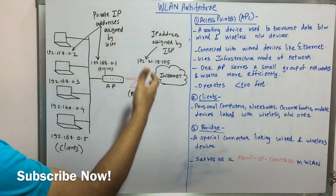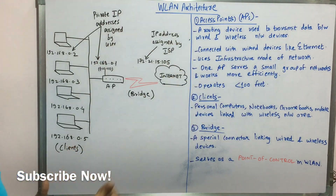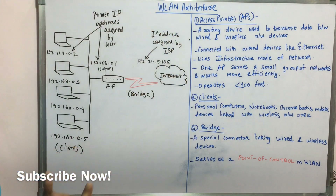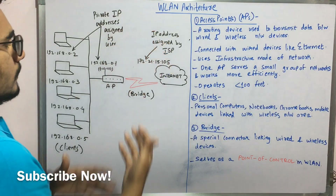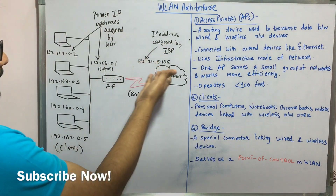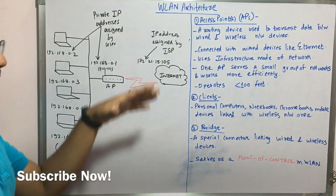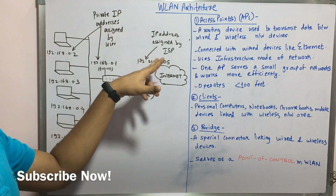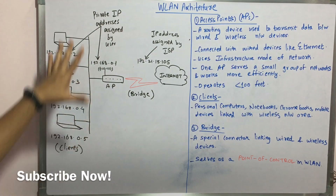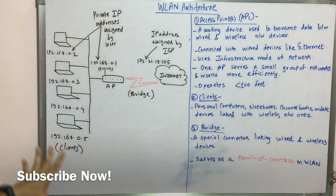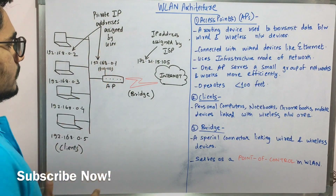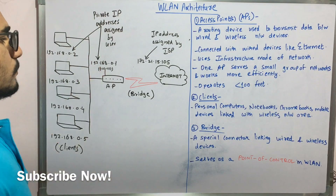Then you have a bridge which is connecting to the internet. The internet also has an ISP address which is assigned by the internet service provider — for example, we have taken 172.21.15.105. So this is the architecture; it's a simple architecture. Now let's understand the different components included in it.